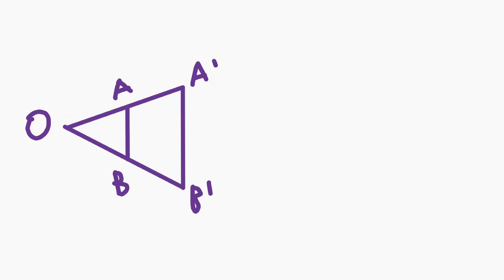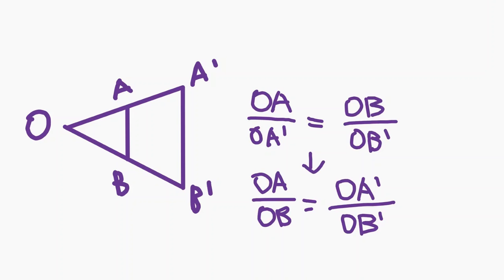Okay, so here we have a homothety at a point O that takes segment AB to A prime B prime. We can figure out a few things about these segments. We know that OA over OB is equal to OA prime over OB prime because of homothety.